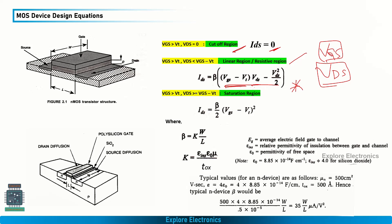In the saturation region, VDS exceeds VGS minus VT, so the channel becomes pinched off and current no longer depends on VDS. The saturation current expression is: IDS = (beta / 2) × (VGS − VT)². There is no VDS term in this expression at all — current has no dependency on VDS in saturation.